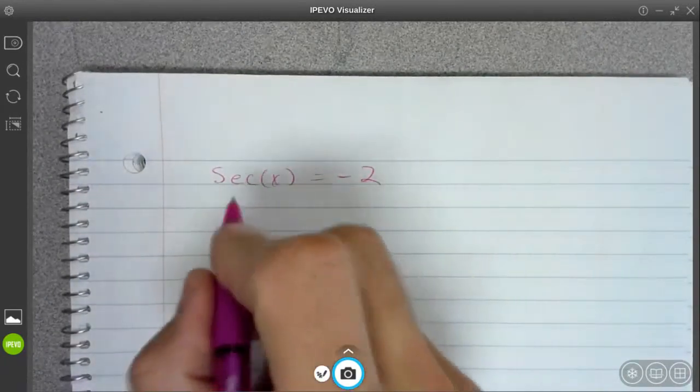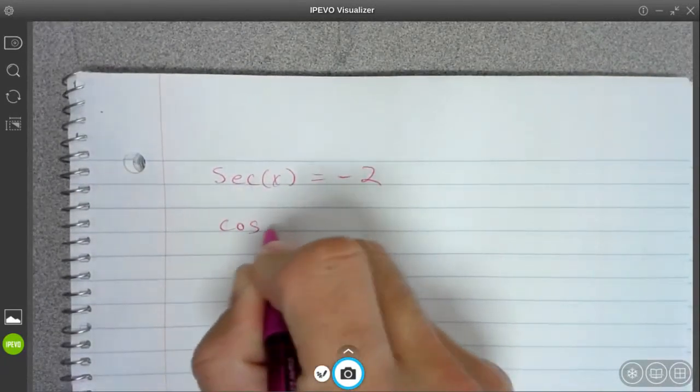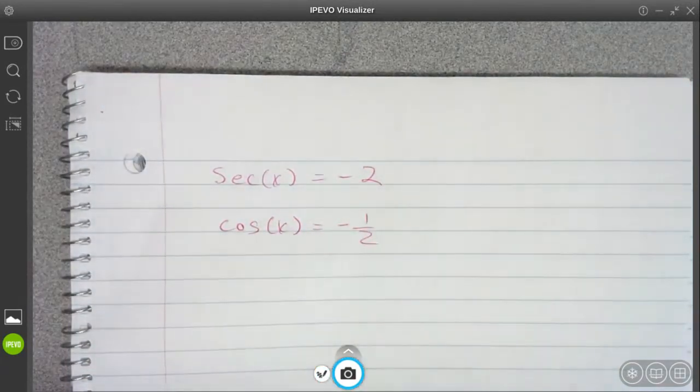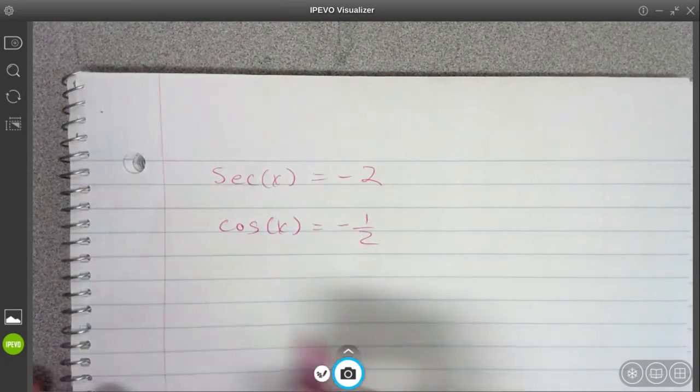If secant is equal to negative 2, that means that cosine is equal to negative 1 half. And you just want to find the two angles between 0 and 2π where cosine is equal to negative 1 half.